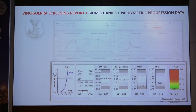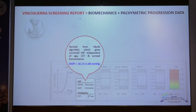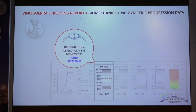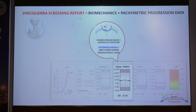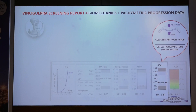The Vinciguerra screening report includes the SSI curve, which shows the intrinsic elastic properties of the cornea — normally equal to 1; less than 1 indicates a softer cornea, more than 1 a stiffer cornea. The bIOP is extremely important because it is the biomechanically corrected IOP, independent of age, corneal thickness, and corneal biomechanics. The deformation ratio includes both deflection and eye movements due to the air puff. The integrated radius is the area under the inverse concave radius curve — the more the area, the softer the cornea. The Ambrósio relational thickness to the horizontal profile includes pachymetric thickness divided by pachymetric progression. The stiffness parameter is the adjusted air pulse minus bIOP, divided by the deflection amplitude — the higher the value, the better the stiffness and biomechanics.